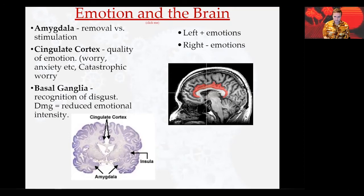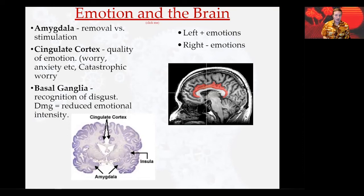Emotion and the brain. The first structure I'd like to discuss is the amygdala. When the amygdala is removed from the brain, the individual acts tame and calm and has no response to fear. However, when this area of the brain is stimulated, they become aggressive. Autism correlates to an underdevelopment of the amygdala.